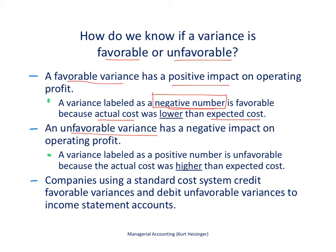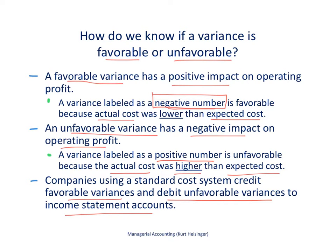An unfavorable variance has a negative impact on operating profit. If a variance in direct materials, direct labor, or variable manufacturing overhead is a positive number, it's unfavorable because the actual cost is higher than the expected cost, meaning profits are lower than expected. Companies that use a standard cost system credit favorable variances and debit unfavorable variances to income statement accounts — more on that in a separate lecture.